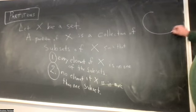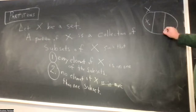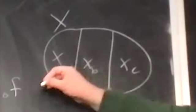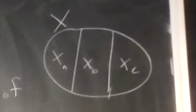You have your set x and you have your partition x sub a, x sub b, x sub c. And x sub a, x sub b, and x sub c completely cover the set with no overlap between them. Does that make sense?